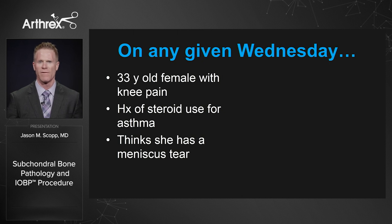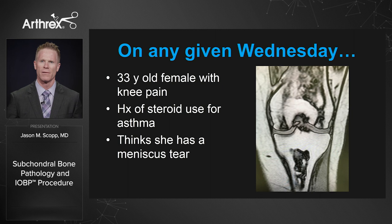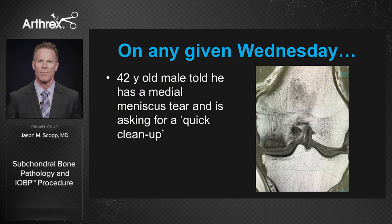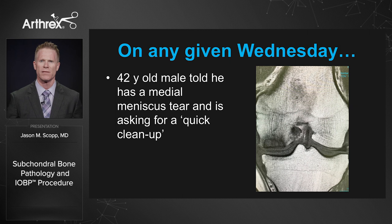She had extensive asthma. She thought she had a meniscus tear. When I got her MRI, this is what we saw. The second patient, a 42-year-old, was told he had a meniscus tear and was asking for a quick cleanup so he doesn't have a lot of time off work, and this is what his MRI showed.